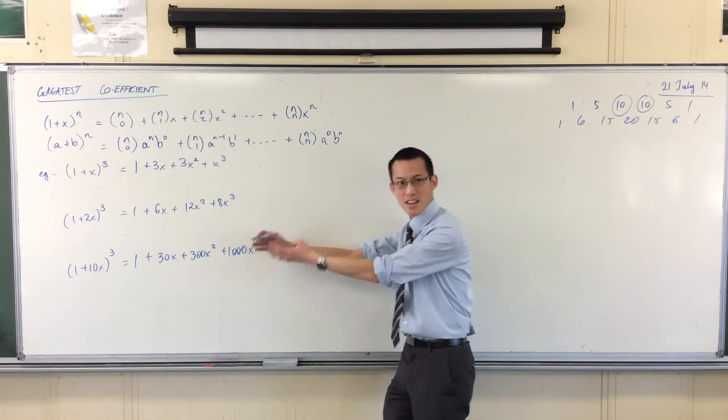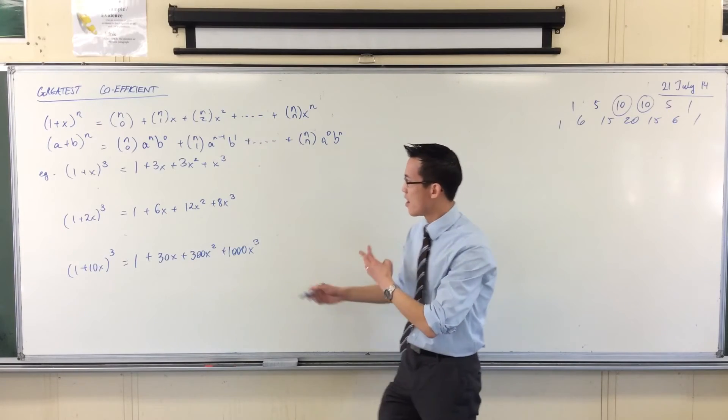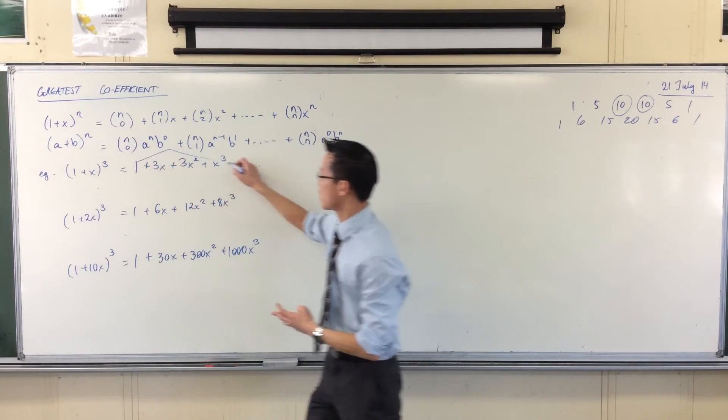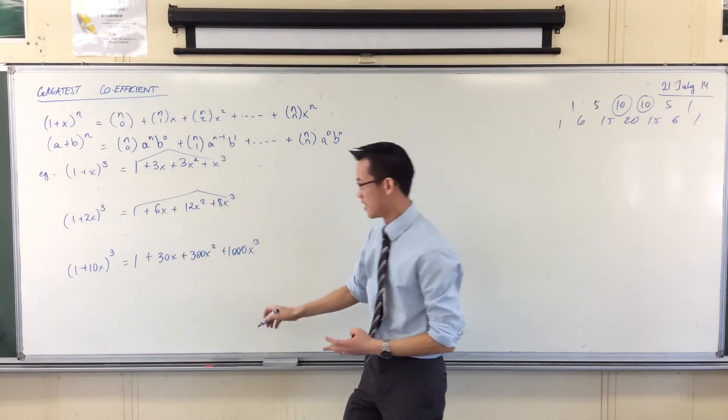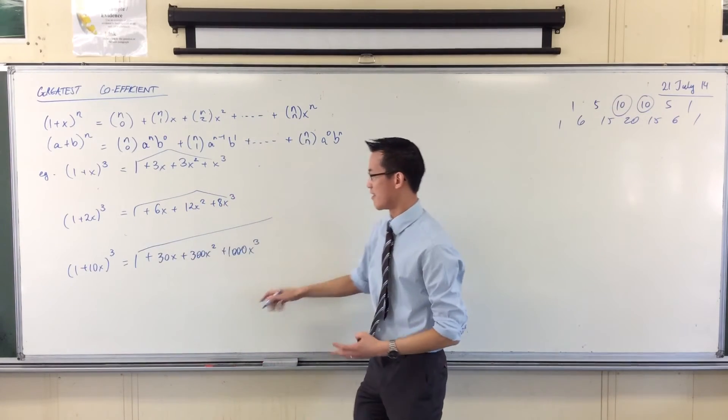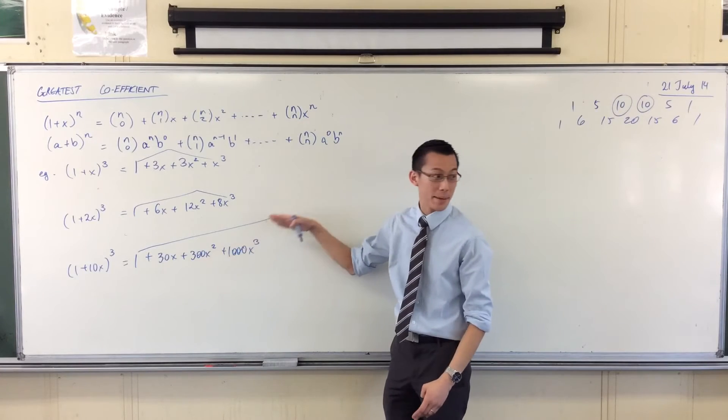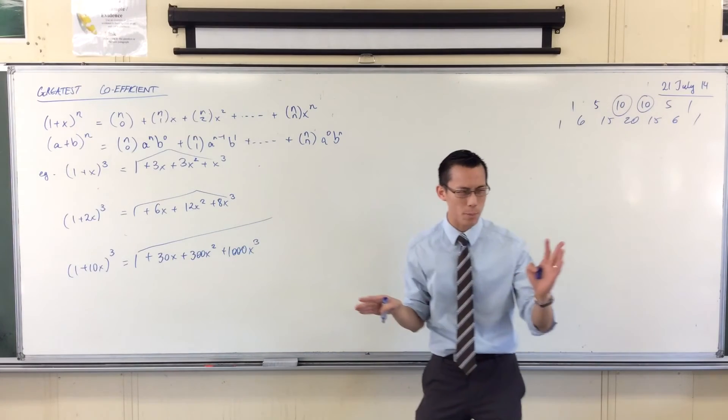So you can see, I've leaned all the way this way. Rather than a nice symmetrical shape, and this one which is leaning over a little bit, this one's just leaned over all the way. In terms of my coefficients, they just keep on getting bigger and bigger and bigger.